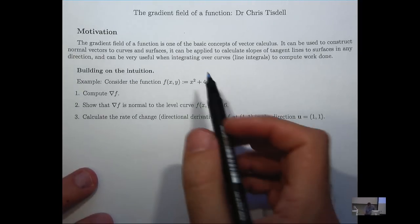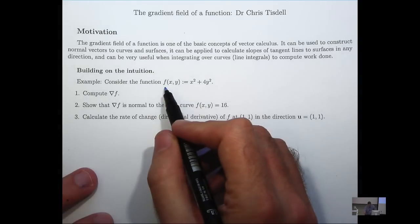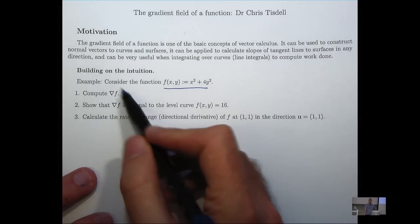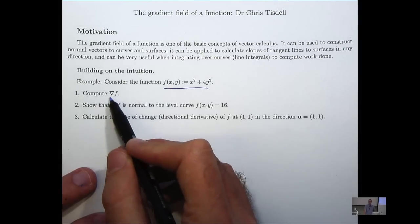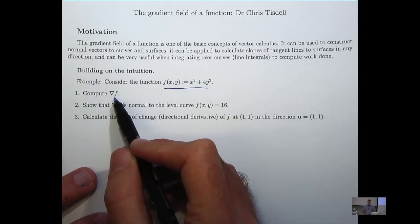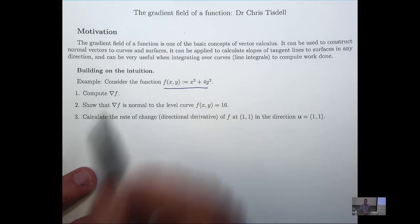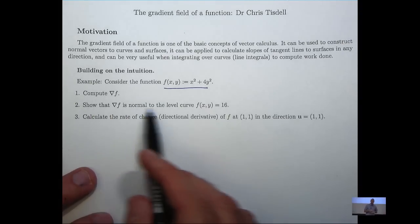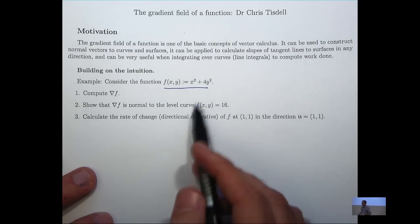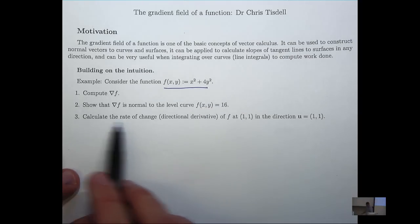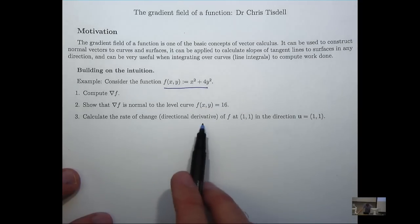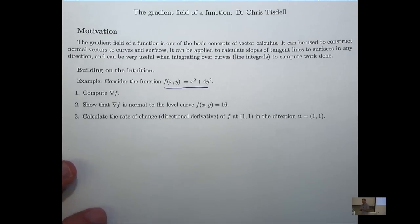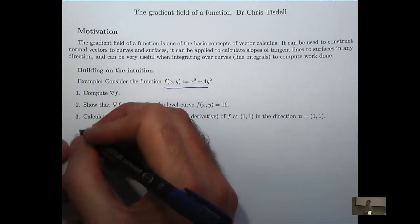In this particular example we've got a function of two variables. We're asked to compute grad f, this notation for the gradient of f, this nabla f. We're asked to show that the gradient is normal to this level curve associated with this function, and we're also asked to calculate the directional derivative of our function at this point in the direction of this vector. So we're going to work through them one by one.